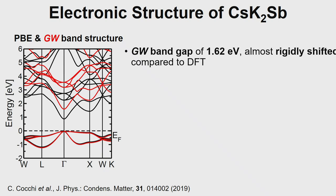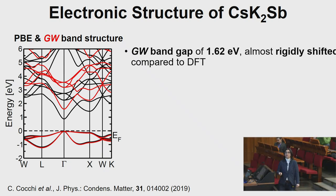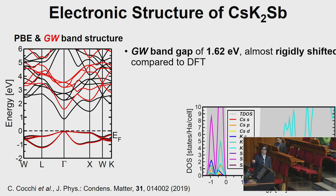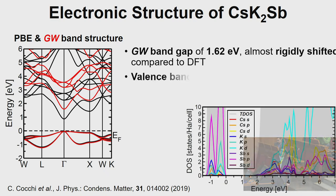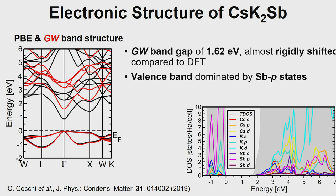This is the band structure of the material I investigated, both with PBE and GW. The GW gap is 1.62 eV, which is very good news for experimentalists who want to absorb visible light, and is almost rigidly shifted compared to DFT. This is the projected density of states to give you the composition. The valence band is dominated by this antimony P state, these magenta peaks that are partially cut. The conduction band is dominated by S states mainly from cesium and antimony, very weak here because it's very parabolic.